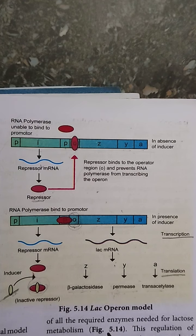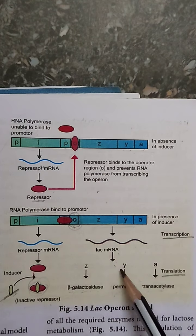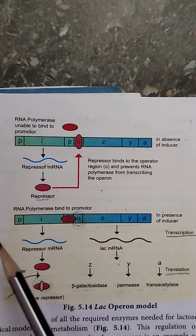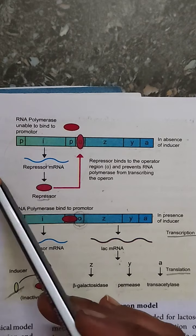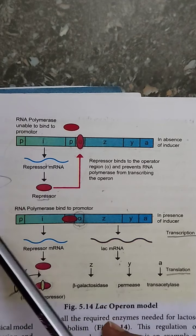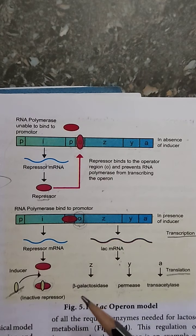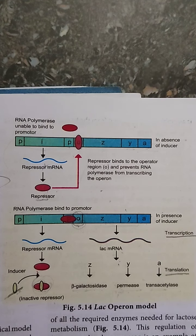Please go through this topic — regulation of gene expression. Questions that may be asked include: explain the lac operon or lactose operon concept; how is gene expression regulated in the lac operon; what is an operon; what are the enzymes required for lactose metabolism; what is the role of these enzymes; and what structural genes are located in the lac operon. These may be asked as 2-mark, 3-mark, or 5-mark questions.